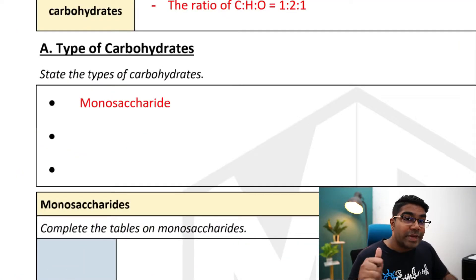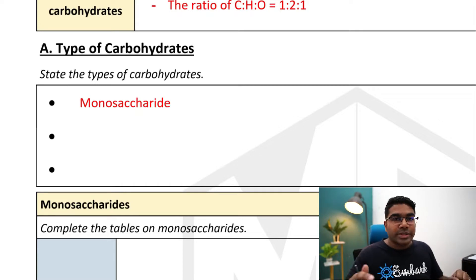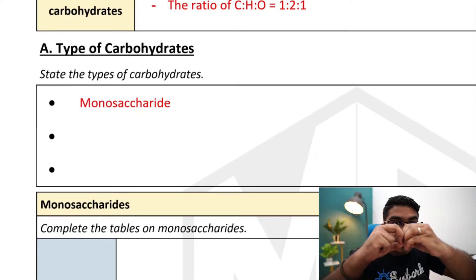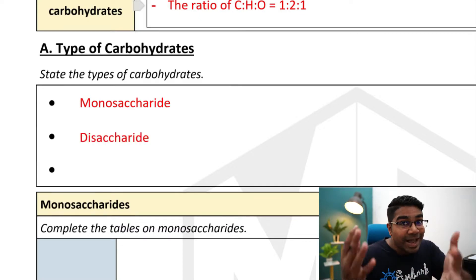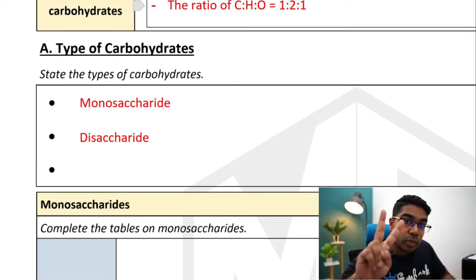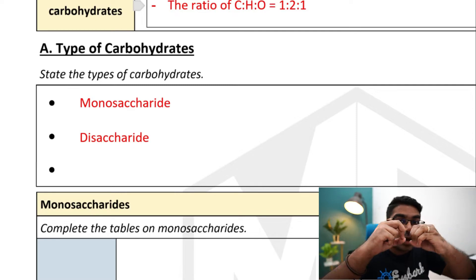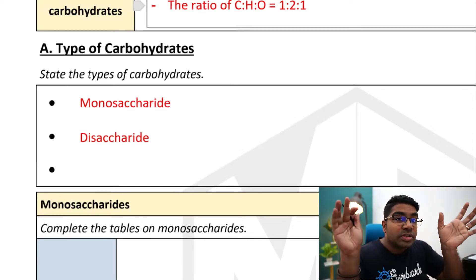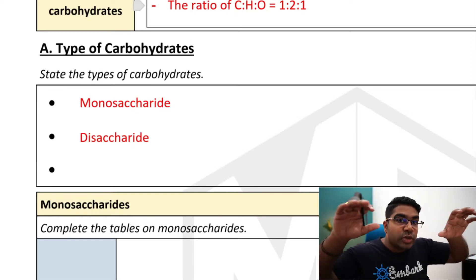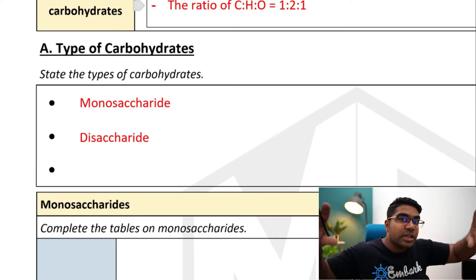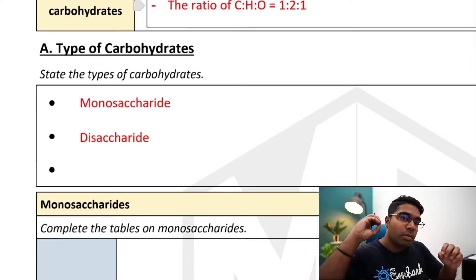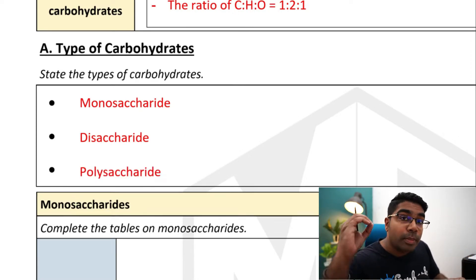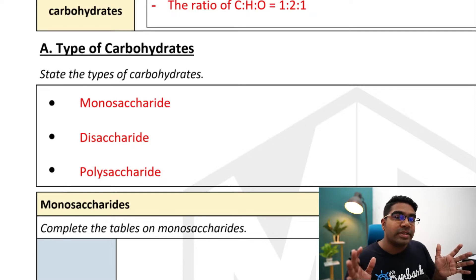There are three types of carbohydrates. The first is the monosaccharide — mono stands for one or single. When you combine two monosaccharides together, you get a disaccharide. Di means two. When you combine many monosaccharides together, or several disaccharides together, you get a long chain of many monosaccharides joined together chemically — this is called the polysaccharide. Poly stands for many.